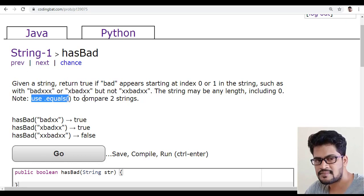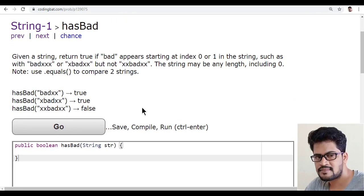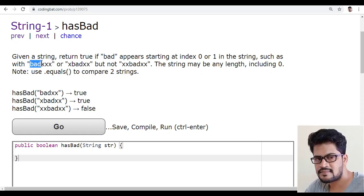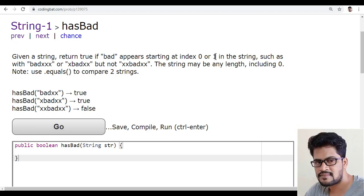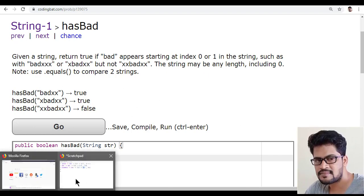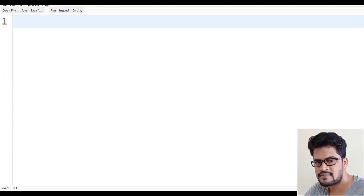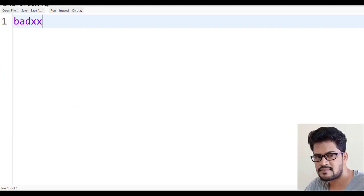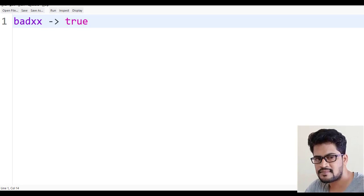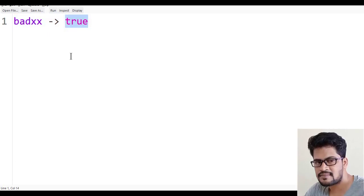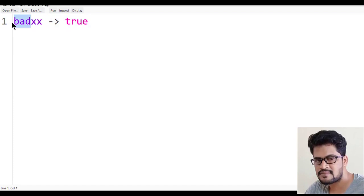So how to check if the 'bad' string starts from index zero or one? Let me understand the program. Let me go to my scratchpad. Here I'll write badxx, which should return true because the first three characters starting at index 0 are 'bad'.